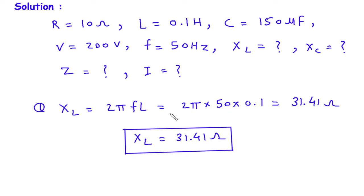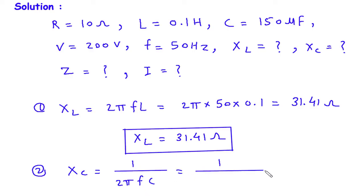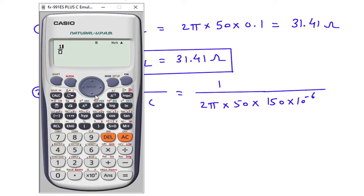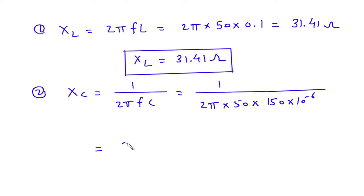Next we have to find capacitive reactance. XC is equal to 1 upon 2 pi F C. So this will be 1 upon 2 pi multiplied by frequency 50 hertz, multiplied by 150 multiplied by 10 to the power minus 6. Solving this gives 21.22 Ohm. This is the value for XC.